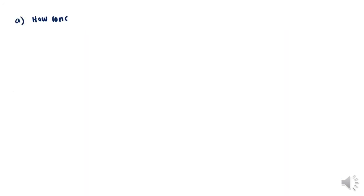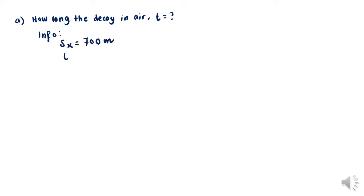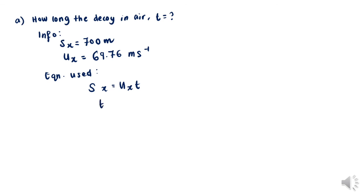For part a, we find how long the decoy is in the air. Given sx equals 700 meters and ux equals 69.76 meters per second, we use sx equals ux times t, rearranged to t equals sx over ux. Substituting all values gives t equals 10 seconds.